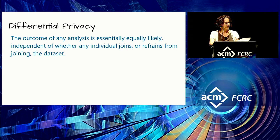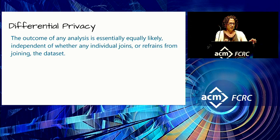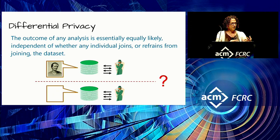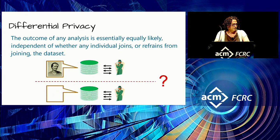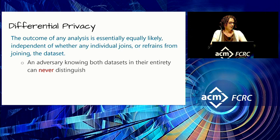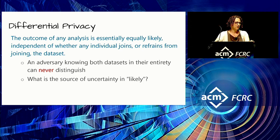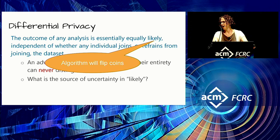This brings us to the English-language definition of differential privacy: the outcome of any analysis is essentially equally likely, independent of whether any individual joins or refrains from joining the dataset. Intuitively, we have two worlds: in one the database contains Payne, in the other it doesn't. The analyst interacting with these two simply cannot tell which world she is in — even if she knows everything else in the dataset. Our algorithms will flip coins and add noise, which will be the source of uncertainty.